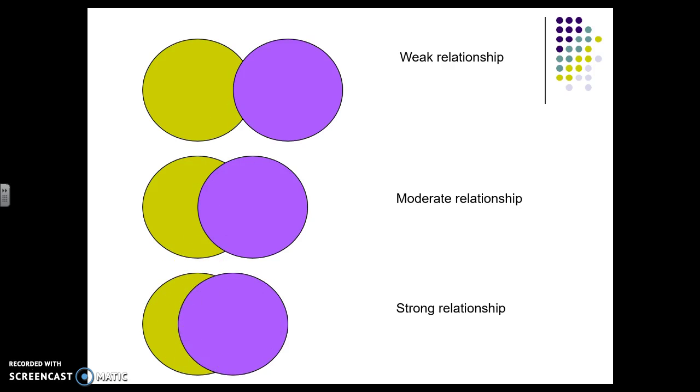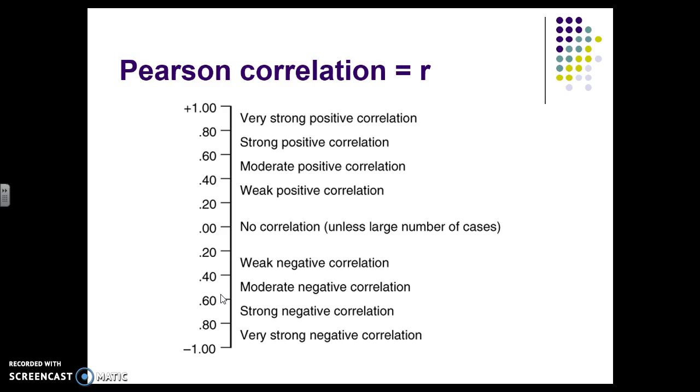The r value that you're going to get - so we calculate a correlation and it gives us an r value. We can have a zero correlation, meaning there's no correlation, up to a positive one. So a very strong correlation is pretty much between 0.7 and above. And then moderate is kind of right here between four and seven. And then a weak positive is kind of between four and two. But these are all very general.